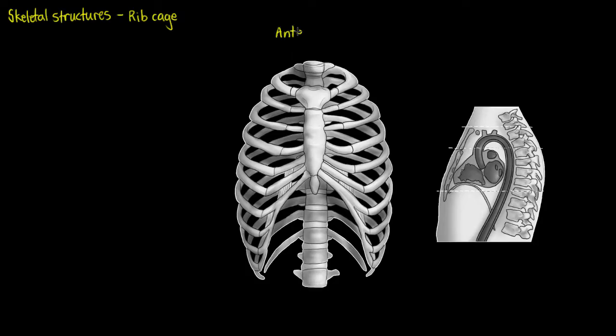First we have an anterior view of our ribcage, so looking from the front of the body. Next we are going to have a parasagittal view. If I draw a line down the middle of the body here, this would be a mid sagittal if we cut here and looked from the side.